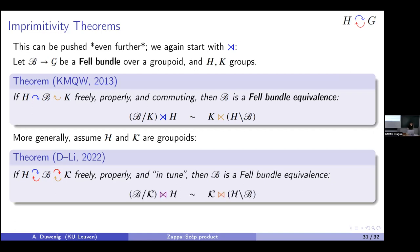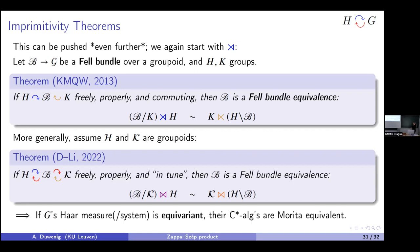If H and K act on B compatibly so that the base groupoid G also acts on the other two — freely, properly, and in this generalized commuting sense — then the bundle B is an equivalence between the Zappa-Szép product bundles. This generalizes the Kaliszewski–Muhly–Quigg–Williams result for semi-direct product bundles to Zappa-Szép product bundles. One reason to care: if there is a nice Haar system on the base groupoid, the C*-algebras of these bundles are Morita equivalent — so for example they have the same K-theory.